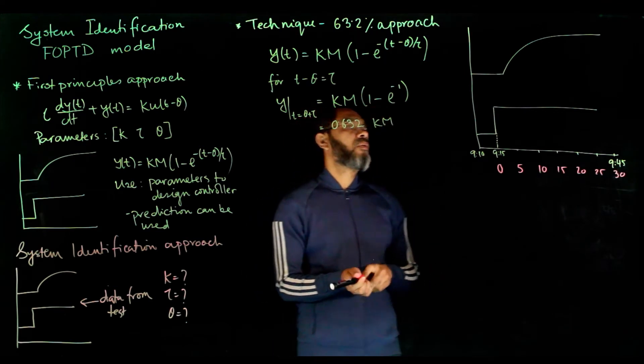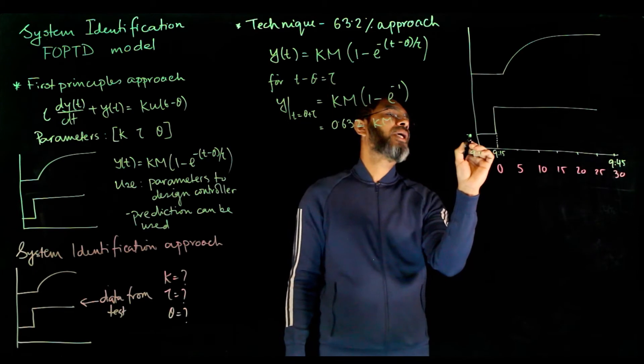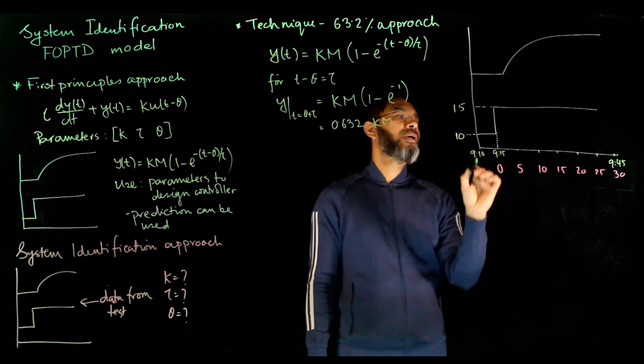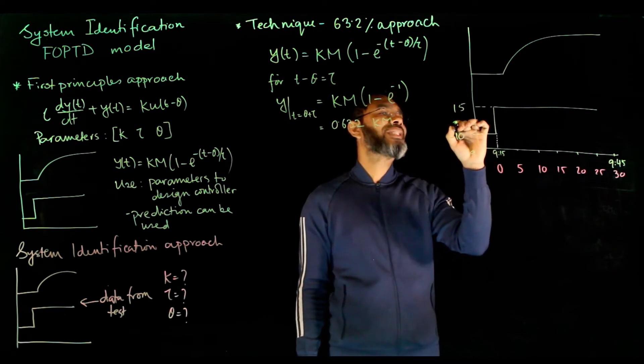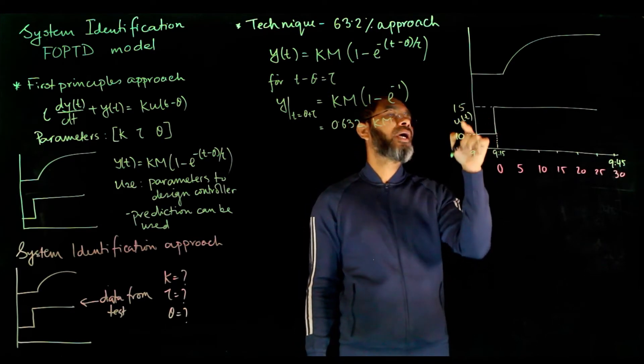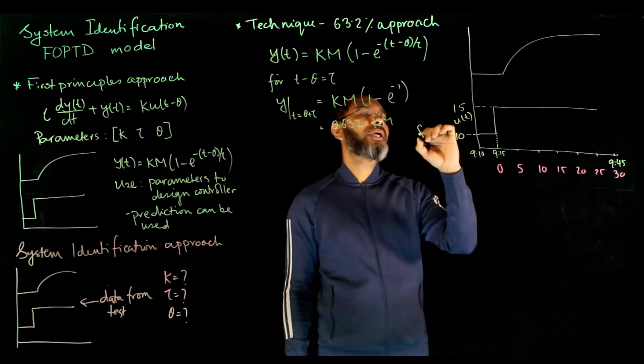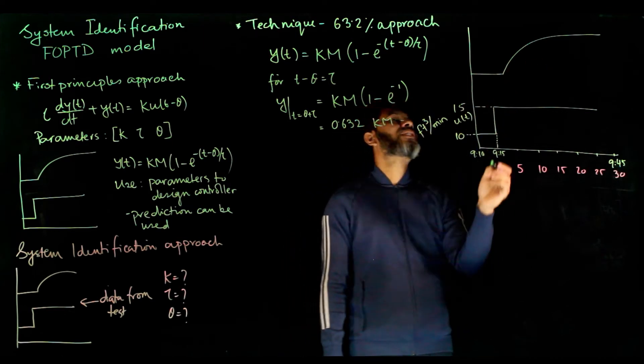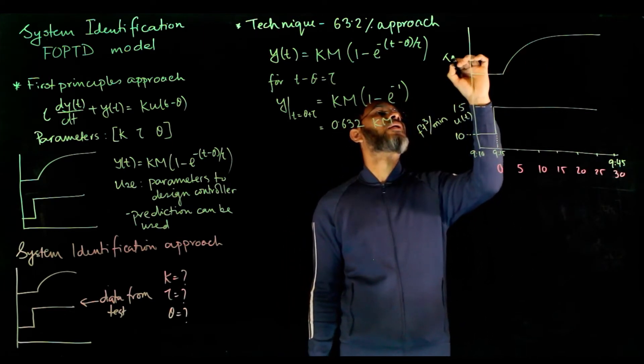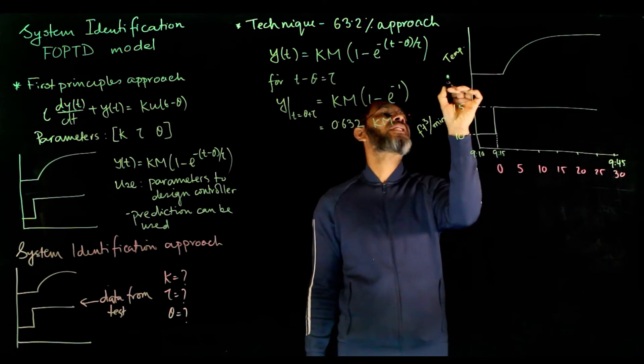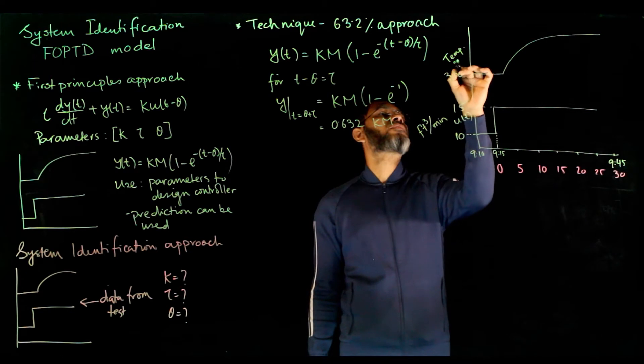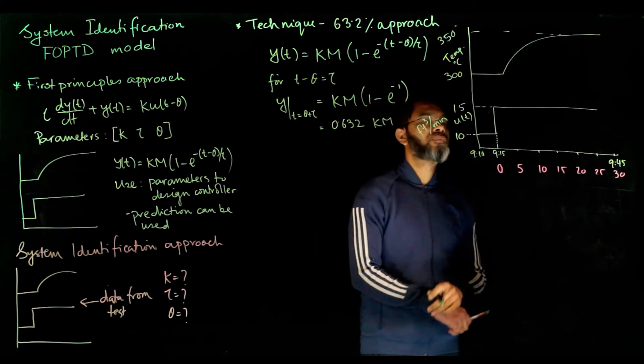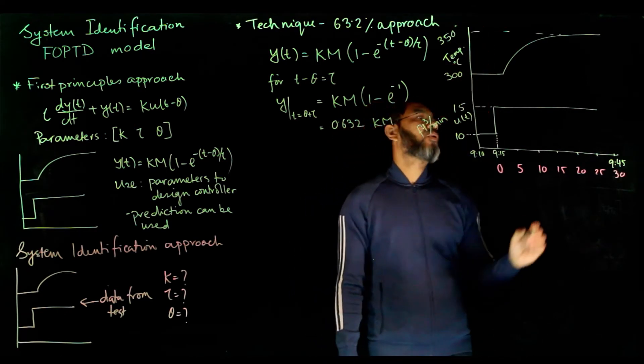How to apply this approach? First, let's look at the values. Suppose the input was initially 10 and then 15. So this is your u(t). Suppose this is a flow rate, so the unit can be cubic meters per minute. Suppose your y value is temperature. Suppose this was initially at 300 degrees centigrade, and finally 350 degrees centigrade.